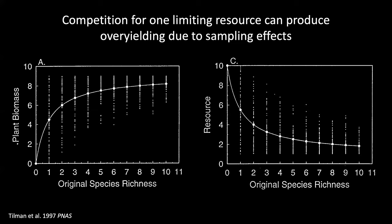However, early theoretical work showed that sampling effects could be thought of as the outcome of a special case of resource competition theory. Specifically, if there's competition for a single limiting resource in a homogeneous environment, and if the species pool contains species that only differ in their R-star values, then the best competitor — the one with the lowest R-star — eventually outcompetes all the other species. Superior resource competitors produce more biomass because they obtain more of the limiting resource. In this case, there can be positive effects of original species richness on plant biomass, and negative effects on resource levels. Although communities begin with any number of species, they all end up with only one species — the single best competitor.